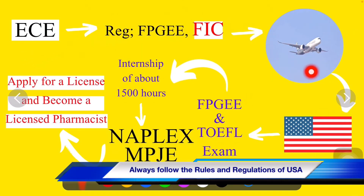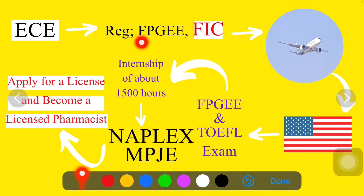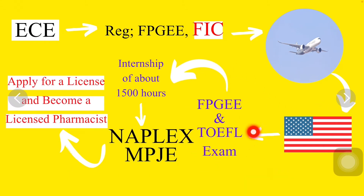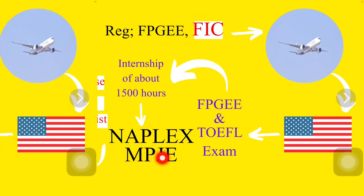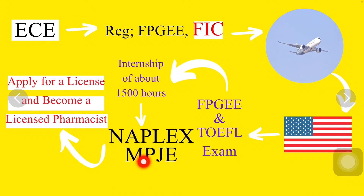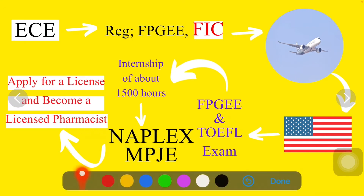Here I have tried to explain all these steps diagrammatically. You can see that the first step is ECE, then after ECE you go for registration for the FPGE exam. After getting your FIC, you go for your visa and travel to the US. When you arrive, you take the two exams, then complete your internship, then take NAPLEX and your law exam.